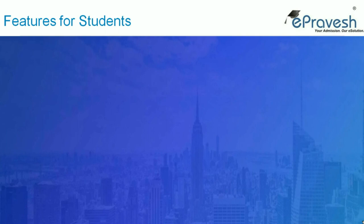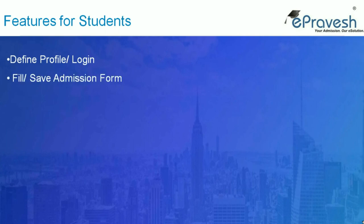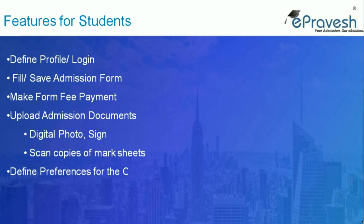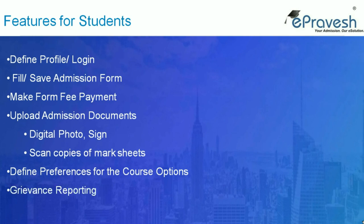Let's start with the student, who is central to this system and the key stakeholder. A student can define an individual profile in the system. The online admission form can be filled or saved in the system from a computer or any mobile device. There is a facility to make form fee payment and upload admission documents like photo, signature copy, and previous examination mark sheet copies in a digital manner. Students can also define preferences for college or stream in the application form, report grievances, and submit queries. Using the same login credentials, students can also download their admit letter.